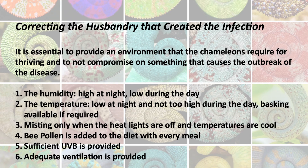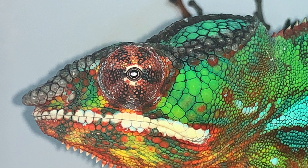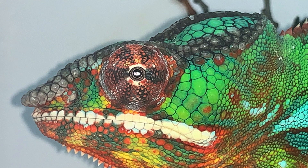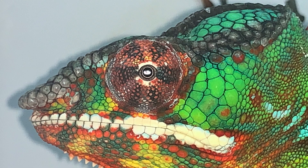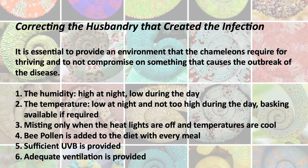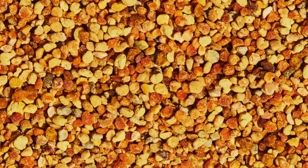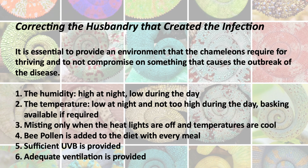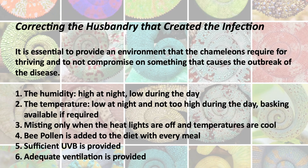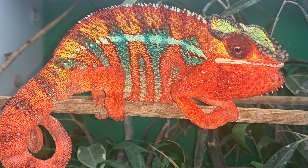Step three: mist only when the heat lights are off and temperatures are cool, using nighttime fogging as the dominant method of hydrating the chameleon and increasing humidity. Point four: bee pollen must be added to the diet with every single meal. Point five: sufficient UVB must be provided. And point six: adequate ventilation must be provided.